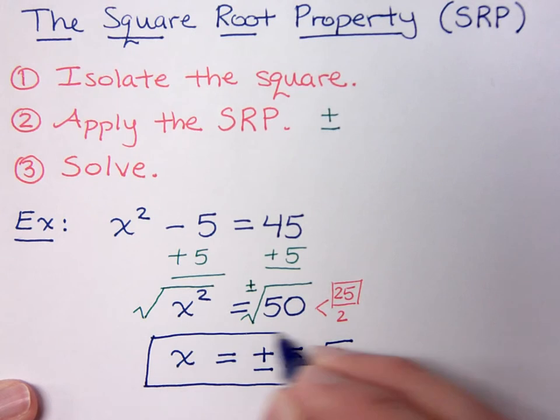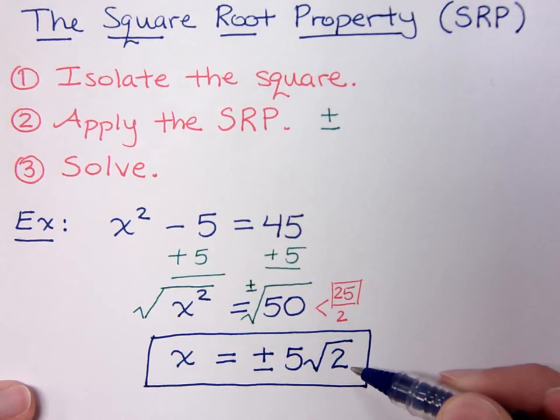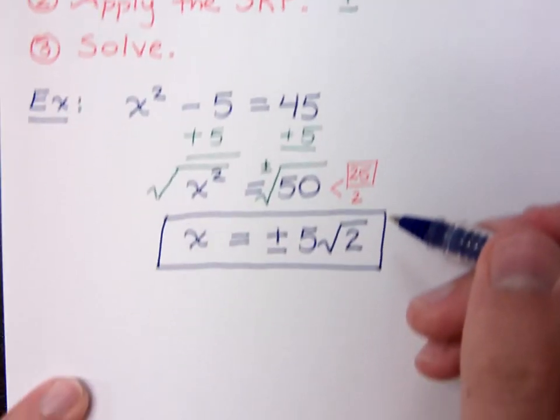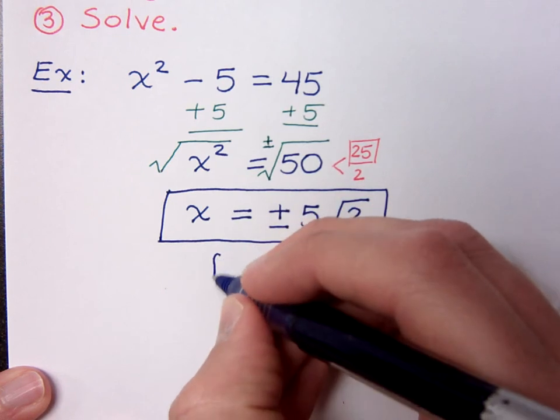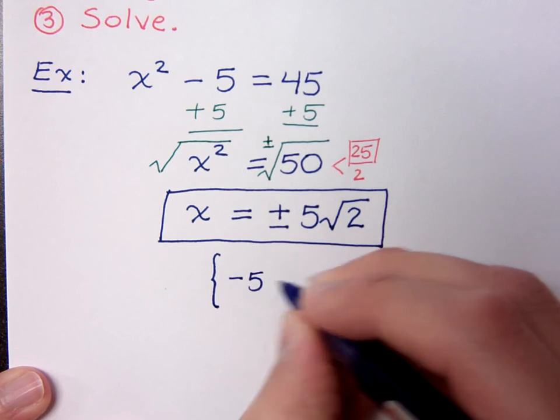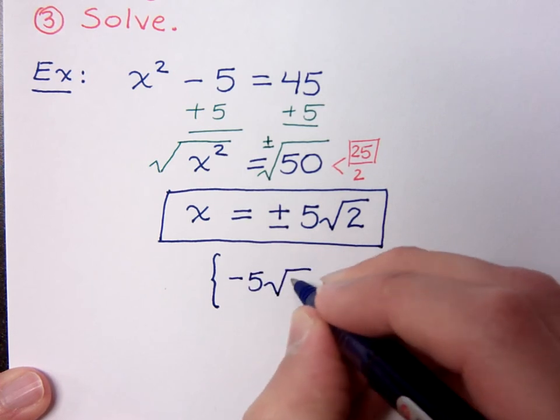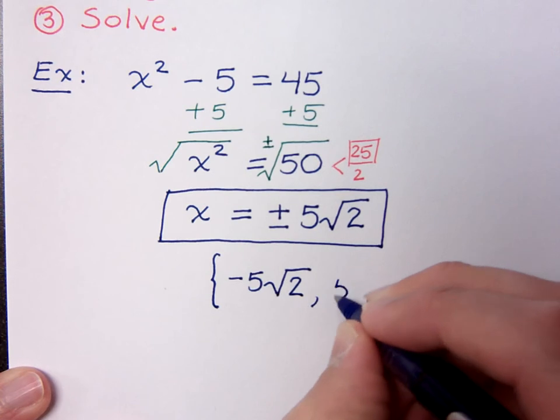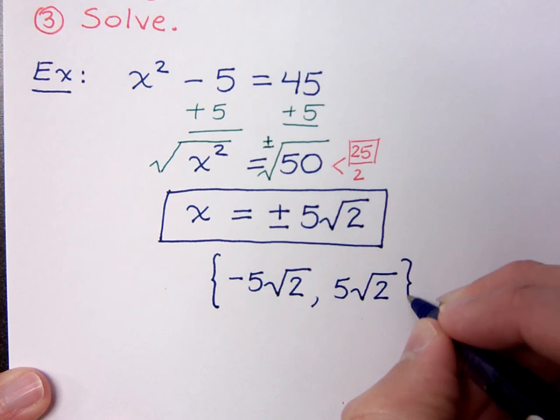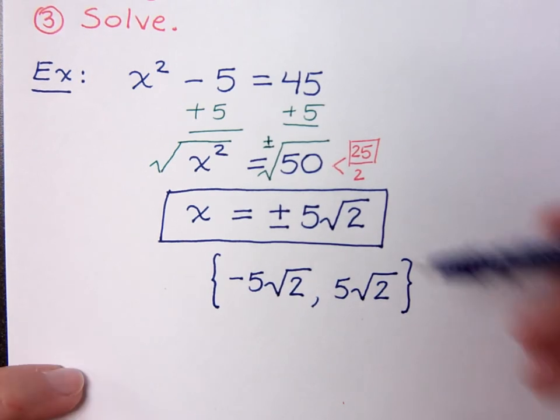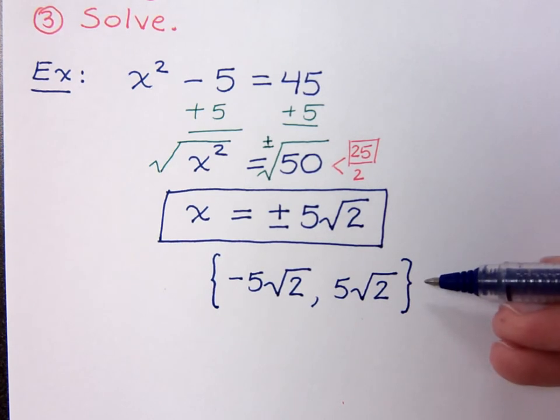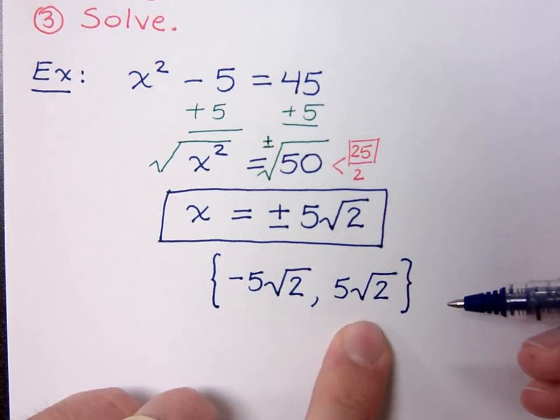Now it is perfectly acceptable for you to leave your answers as x equals plus or minus 5 square roots of 2. You may also see it written like this. You may see them use set notation with the curly braces like this and say, negative 5 square roots of 2 and the other solution 5 square roots of 2. Both of these answers are acceptable. This is written as x equals and this other one is written in what we call set builder notation, where you list each of your solutions.